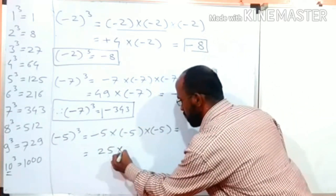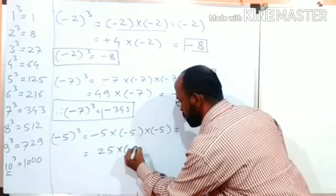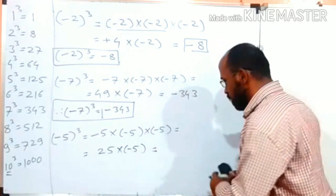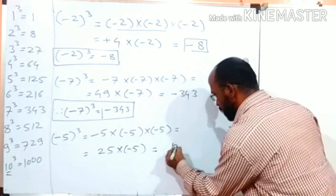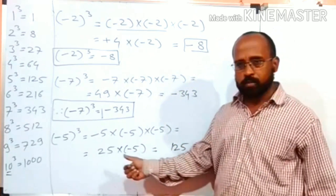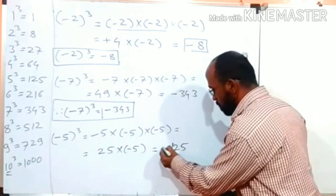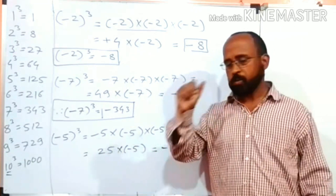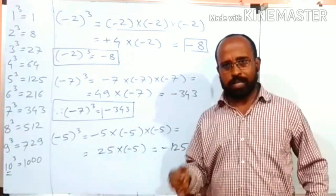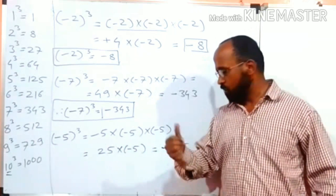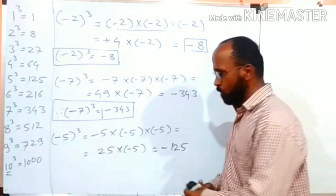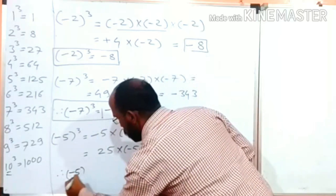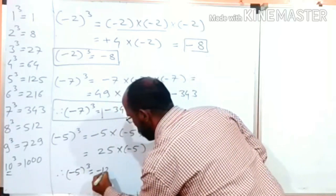Positive 25 multiplied by minus 5. Which is equal to: 25 fives are 125. The symbol of the answer is plus times minus, which is minus. While multiplying two numbers, if the symbol of the two numbers is different, the symbol of the answer is always negative. Therefore, minus 5 cubed is equal to minus 125.